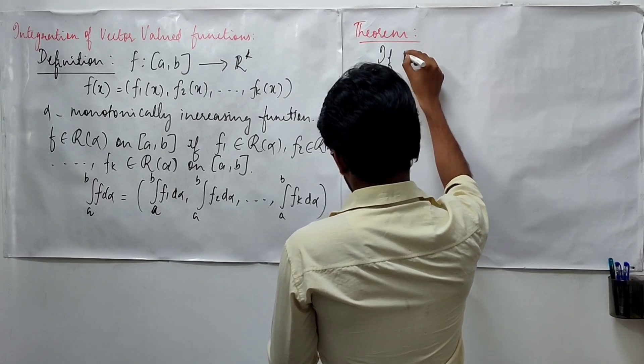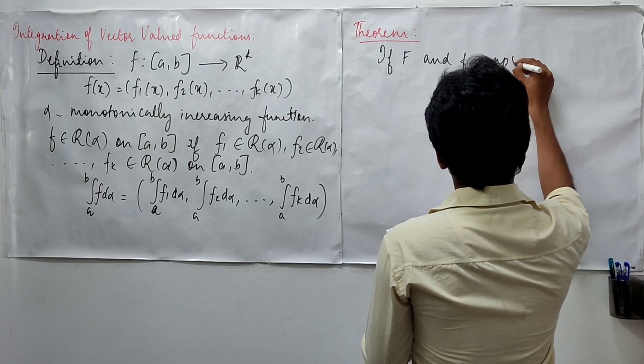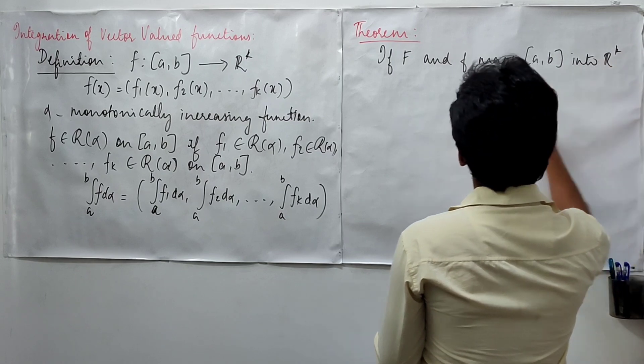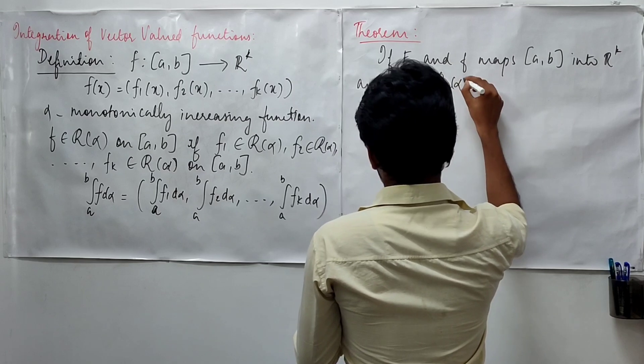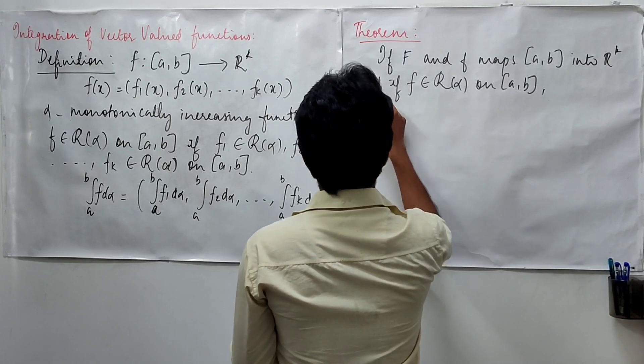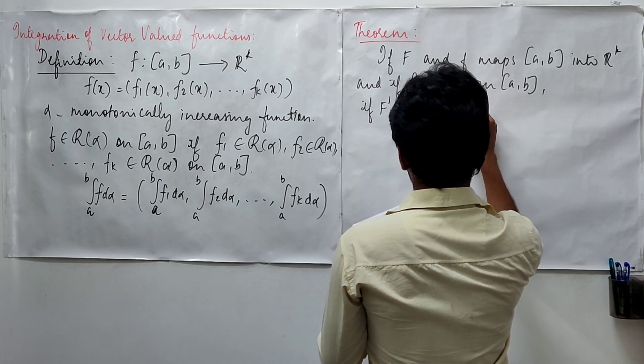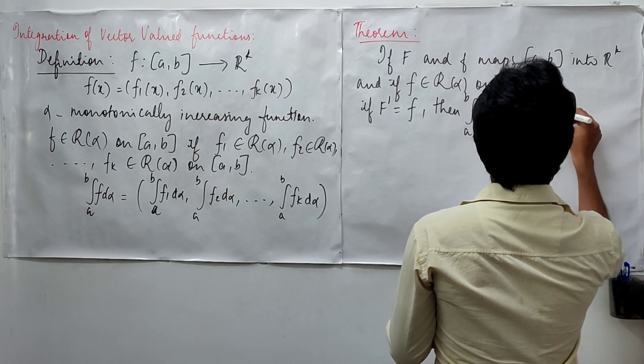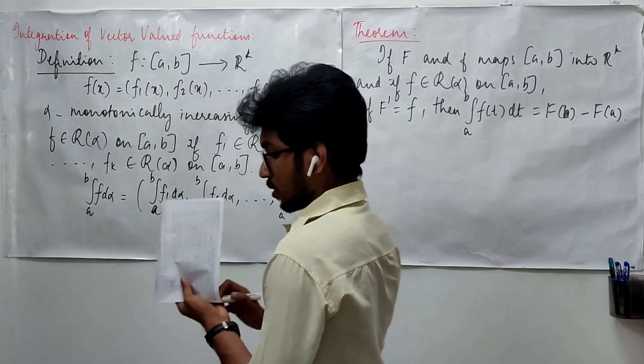If small f and big F map [a,b] into R^k, f is Riemann-Stieltjes integrable on [a,b], and F prime is your f, then we will have integral a to b f(t) dt equals F(b) minus F(a).